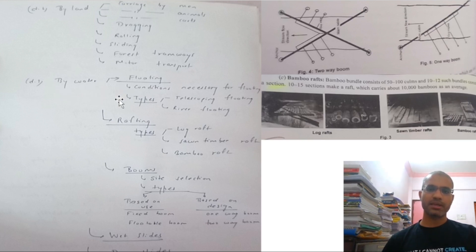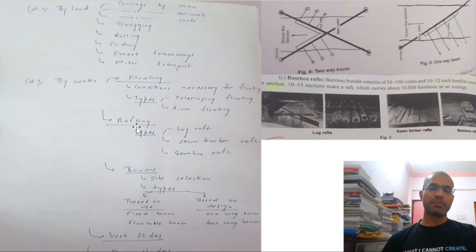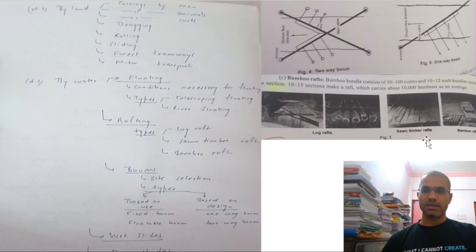The modes of water transportation are: floating, rafting, through booms, wet slides, and dry slides. In floating, timber is placed in the river and transported by the river flow. In rafting, rafts are made from wood and timbers are placed on them and transported — for example, log rafts, timber rafts, and bamboo rafts.